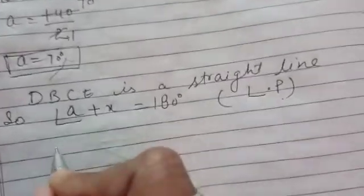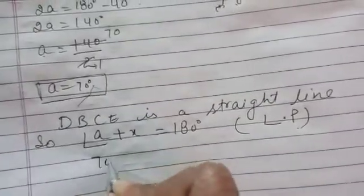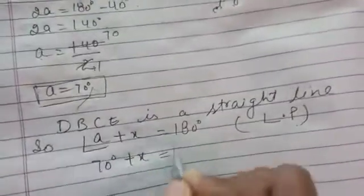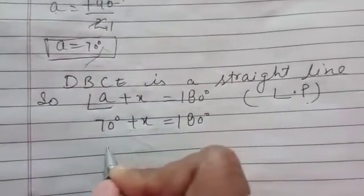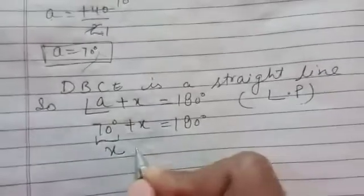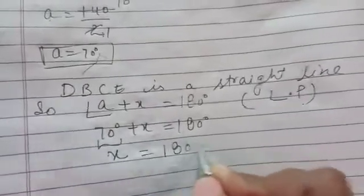Angle 'a' we have found is 70°. So to find x: 70 + x = 180, so x = 180 - 70.